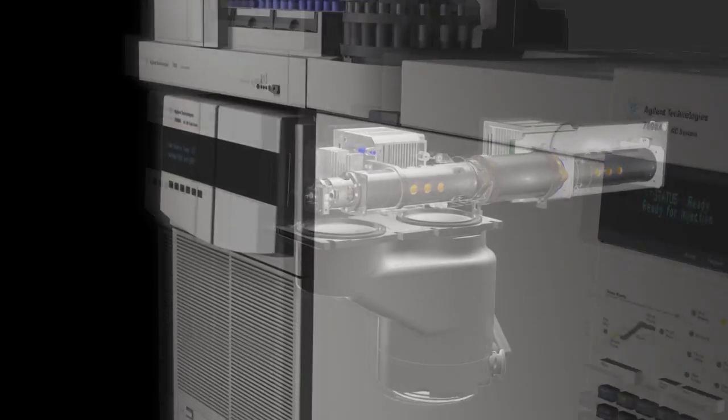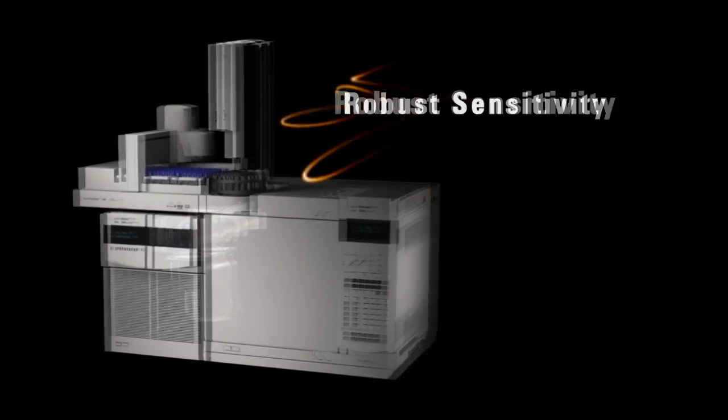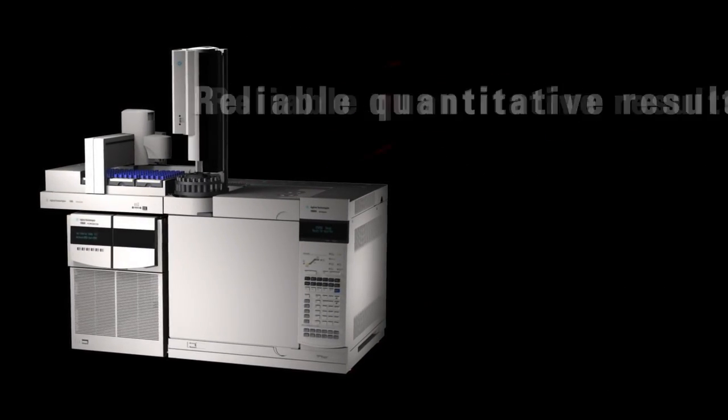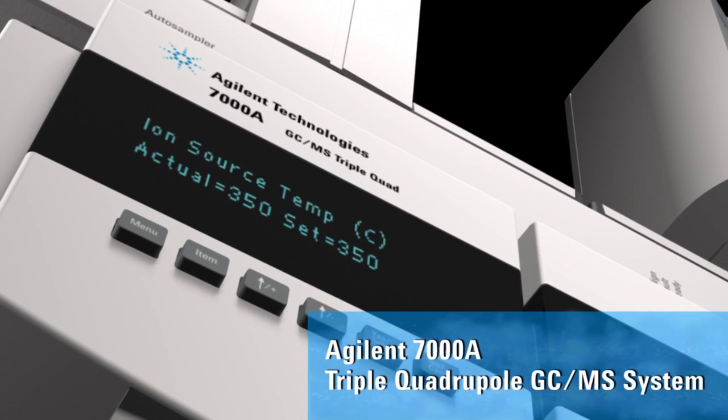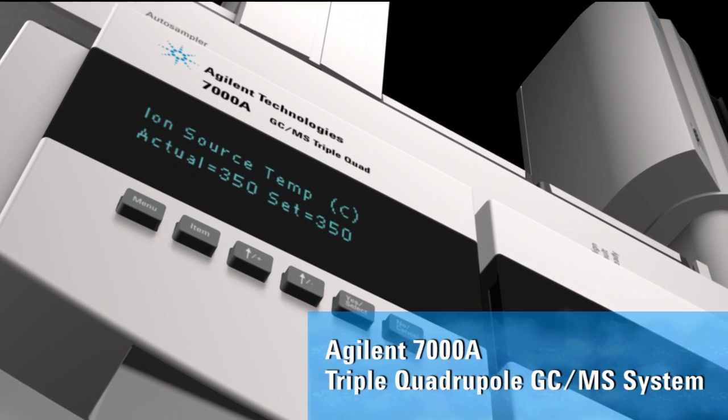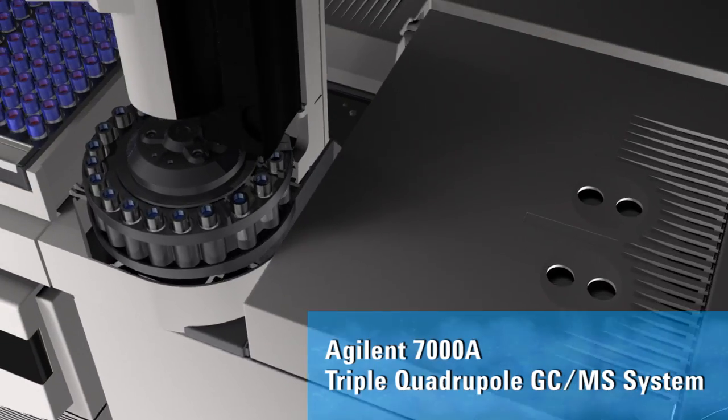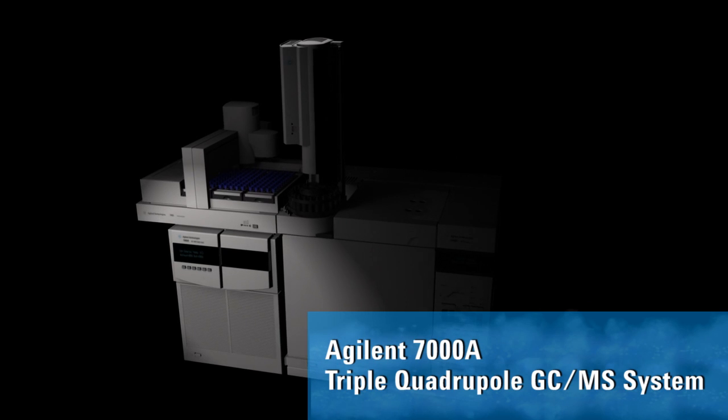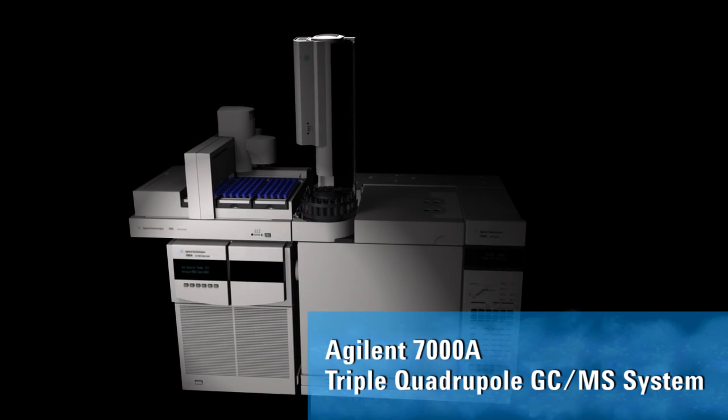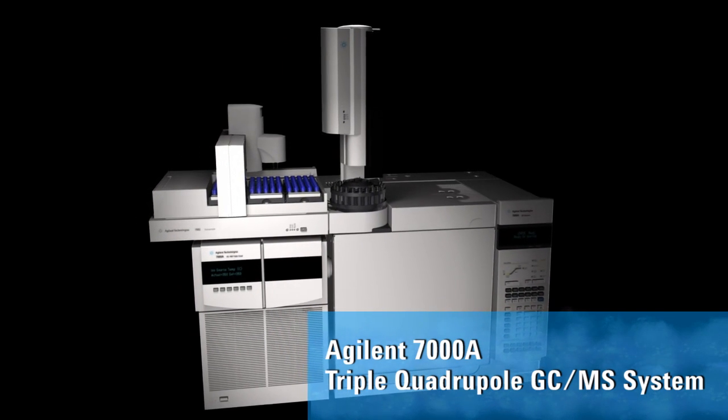The 7000A system has been carefully designed to deliver robust sensitivity and reliable quantitative results. The Agilent 7000A quadrupole GC-MS-MS system. An MS-MS optimized for trace analysis of your most complex GC samples. The new standard for GC-MS-MS performance.